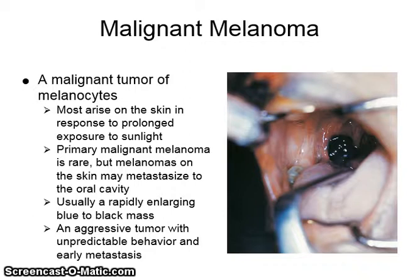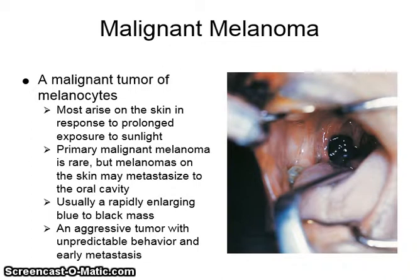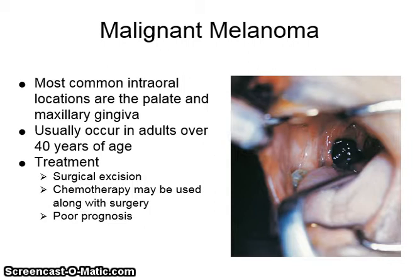Malignant melanoma is a malignant tumor of melanocytes, mostly arising on the skin in response to prolonged exposure to sunlight. Primary malignant melanoma is rare, but melanomas on the skin may metastasize to the oral cavity; usually a rapidly enlarging blue to black mass is seen. It is an aggressive tumor with unpredictable behavior and early metastasis. The most common intraoral locations are the palate and maxillary gingiva. They usually occur in adults over 40 years of age, are treated with surgical excision, and chemotherapy may be used; they have a poor prognosis.